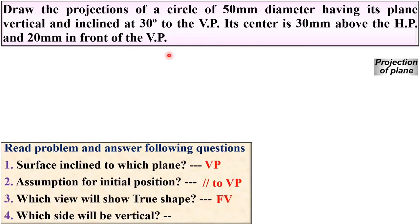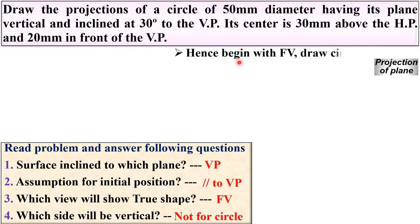Here we have a circular plate, so the question about which side is vertical is not applicable — not for a circle. Since the true shape will appear in the front view, I should start my drawing with the front view. The front view of the circular plate is a circle as the true shape, and it must be above the XY line.